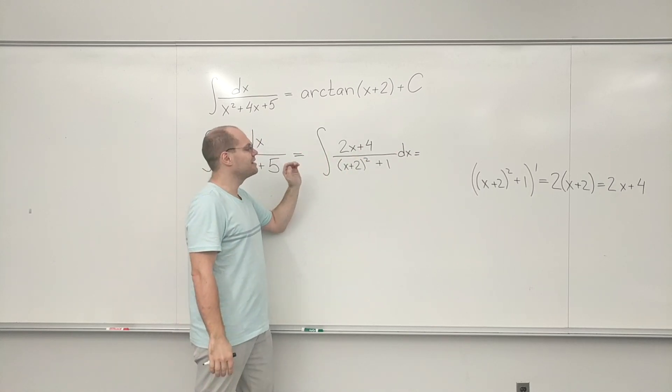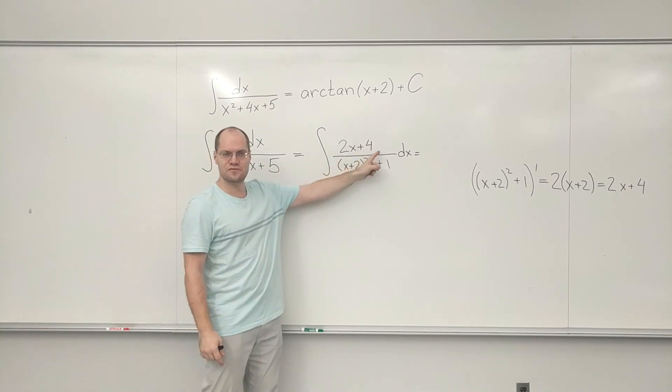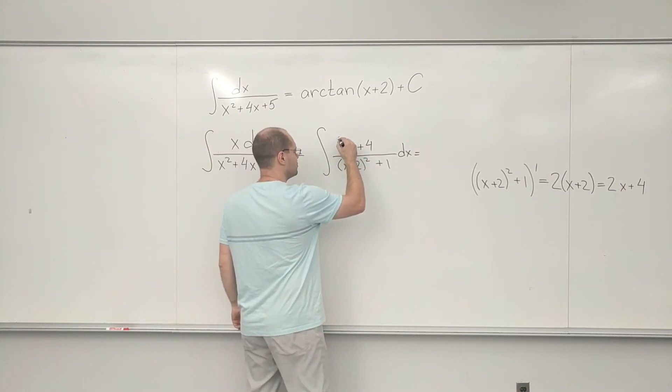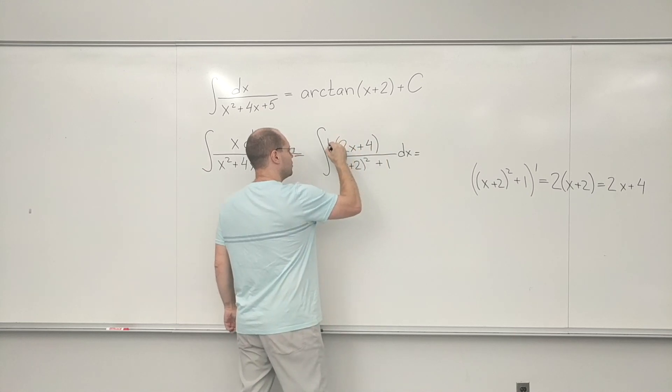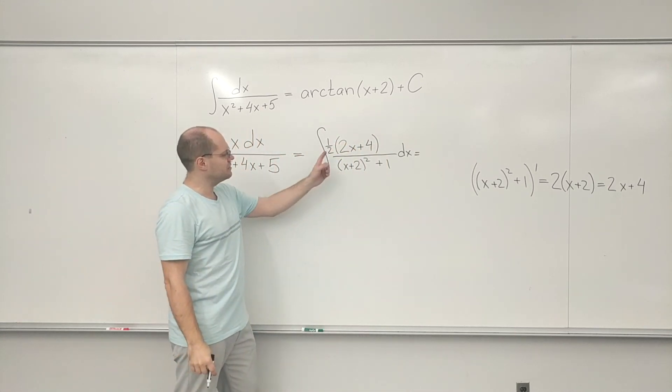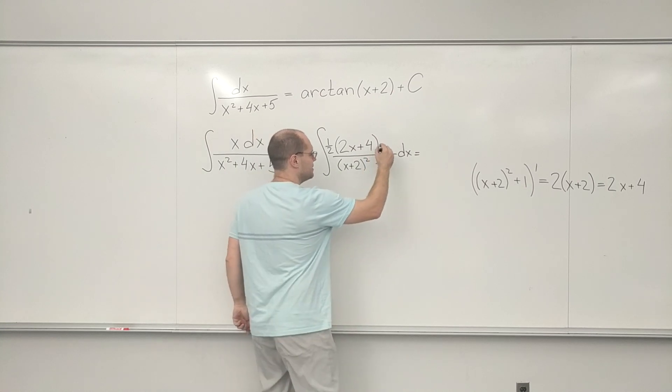So I will, in other words, I will express x in terms of 2x plus 4. So here's how I'm going to do it. I'm going to write 1 half. That gives me x plus 2 minus 2.